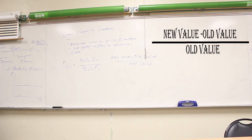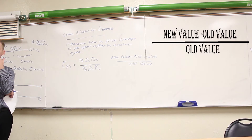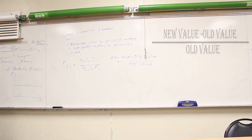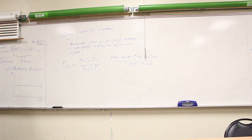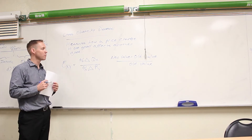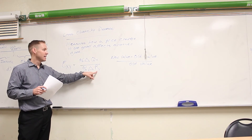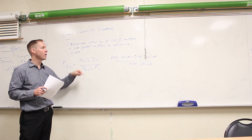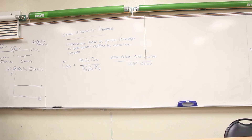In cross-price elasticity of demand, we want to know the elasticity and we also want to know the sign, because the sign tells us whether demand increases or decreases. If this elasticity is negative, think about the non-price factors that shift the demand curve. So let's say we're Coca-Cola and the price change is for Pepsi — the cross-price elasticity would be positive because it's a substitute, and it would be negative if it was a complement.